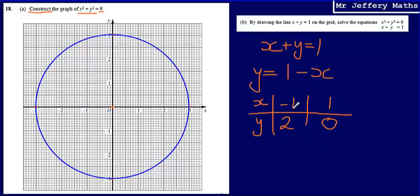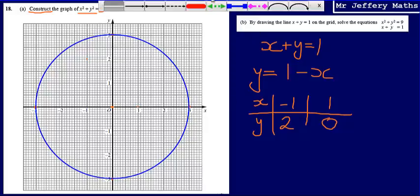So now I can just plot these coordinates, minus 1, 2. So minus 1, 2, which is just there. Then 1, 0. So 1, 0, which is just there. And then connect these with a ruler.